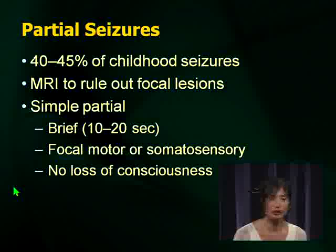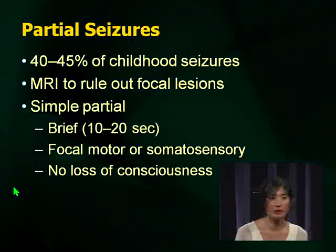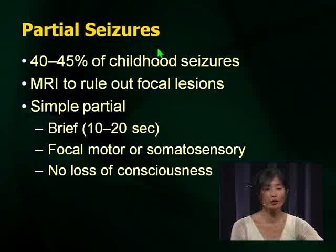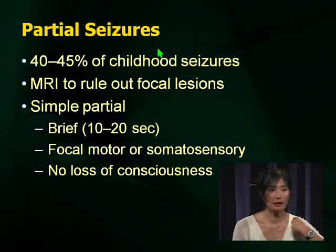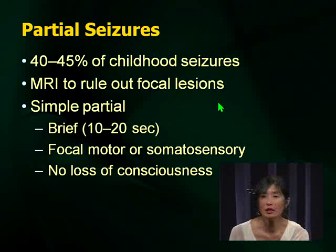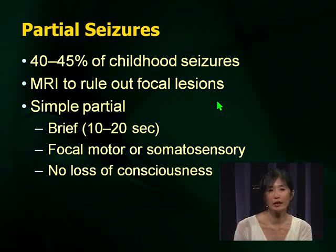Partial seizures — these are more difficult to control seizures, constituting about half of childhood seizures. If you get a scenario with a child with a new onset focal seizure, remember to do an MRI to rule out a focal lesion, because in real life and on your examination, you want to think about what bad thing you can rule out — a tumor, a mass, a space-occupying lesion.